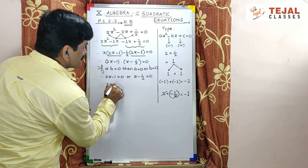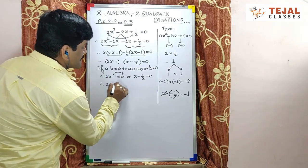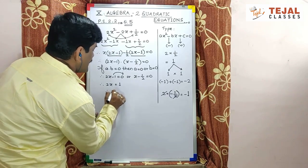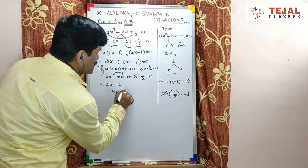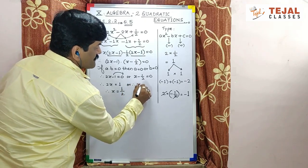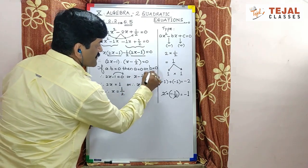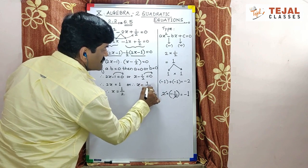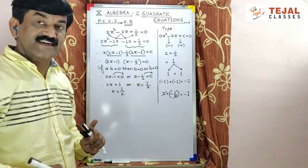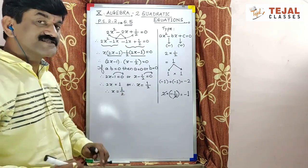Therefore, 2x minus 1 shift to the right hand side will get plus 1. Therefore, the value of x which is 1 upon 2 aur. Therefore, the value of x minus 1 by 2 right mein shift to the other kya hoga? Plus 1 by 2. In this quadratic equation mein dono roots equal hai.